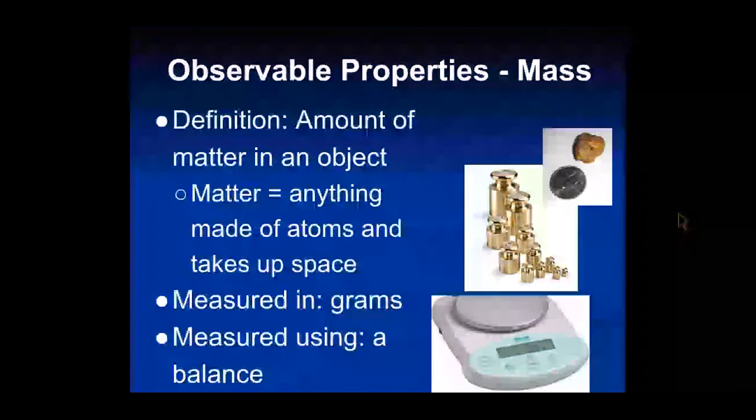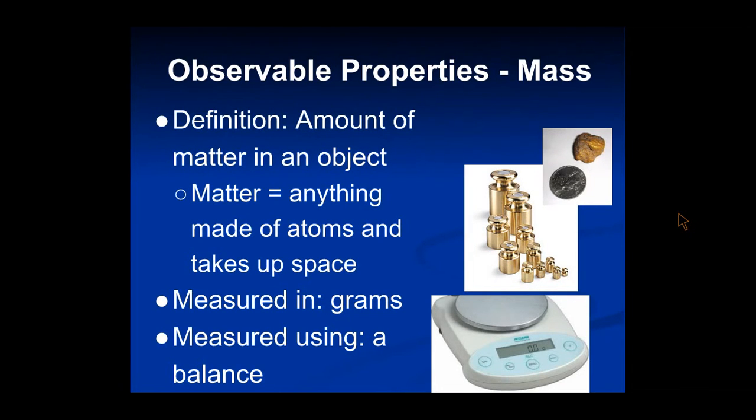First, we are going to talk about mass. Mass is the amount of matter in an object, and matter is anything that is made up of atoms and takes up space. I like to think about it as the stuff, the amount of stuff in an object. So I have more stuff inside of me after I eat lunch than I did before lunch. I have more matter in me after I ate my lunch.